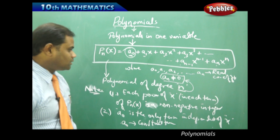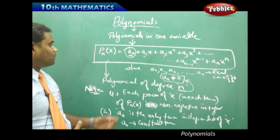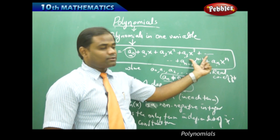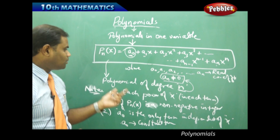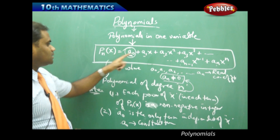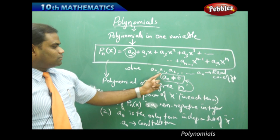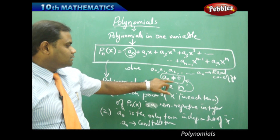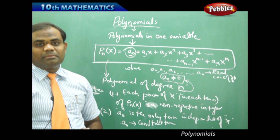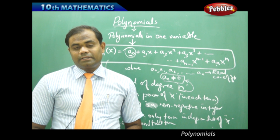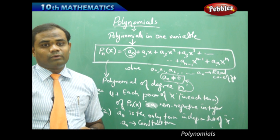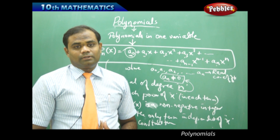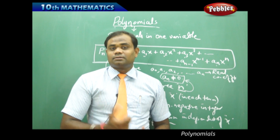So, these are the different structures through which we define a polynomial in a single variable x. To recap: a polynomial generally denoted by Pn of x is written in the form A0 plus A1 x plus A2 x squared, and so on till An x to the power n. This is called a polynomial of degree n because the highest power is n, where each coefficient A0, A1, A2 till An are real coefficients and An is not equal to 0. Let us now see some example problems and identify whether a given algebraic expression is a polynomial or not, and if it is, identify its degree.